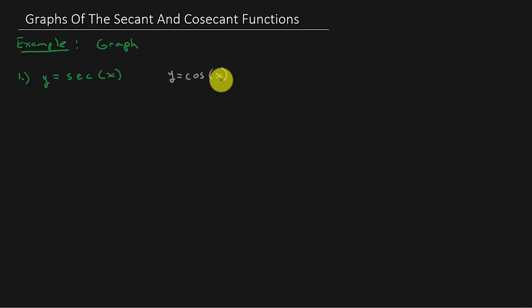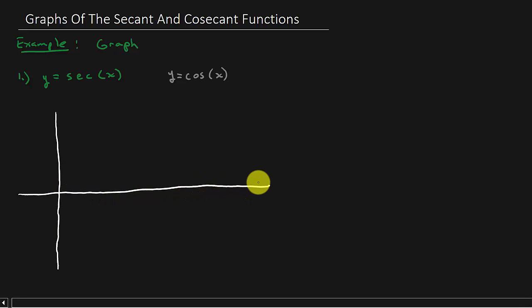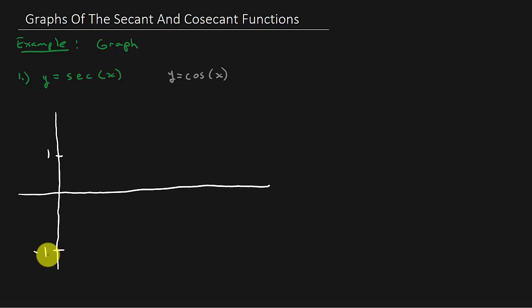The period of cosine x is 2π, and we're going to graph it from 0 to 2π. The maximum and minimum values are 1 and negative 1 — that's the amplitude of 1. We're also going to find the period, the asymptotes, and the range of the function.